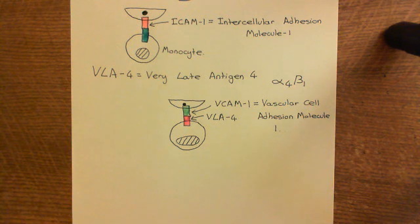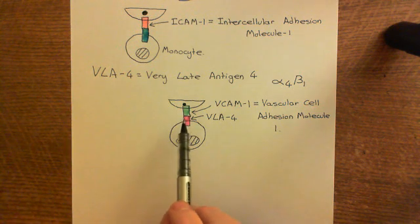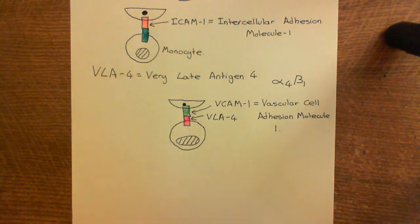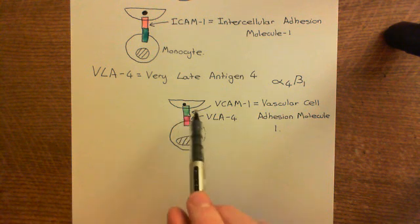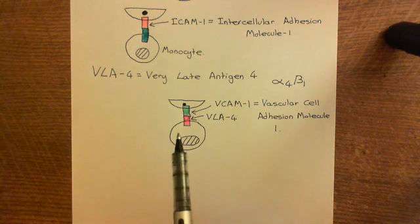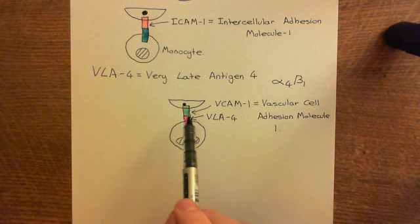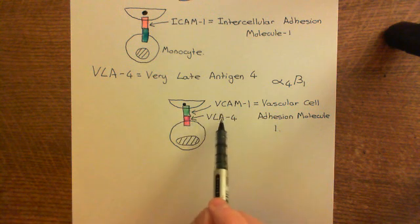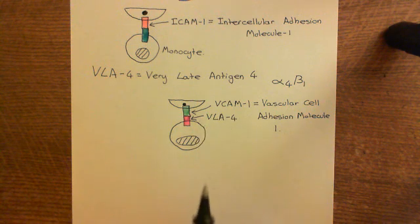Both of these examples — an immunoglobulin superfamily cell adhesion molecule binding to an integrin on the monocyte — are examples of heterophilic binding. For homophilic binding, the two cell adhesion molecules must be identical, not merely in the same family. Even two different integrins binding would count as heterophilic.